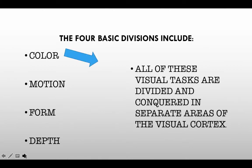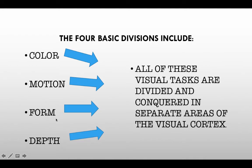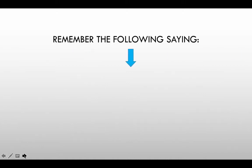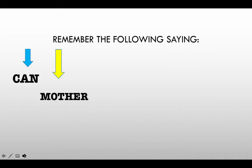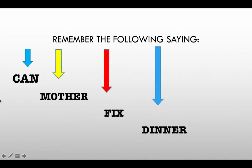Four of these processes are processing color, motion, form, and depth in different areas of the visual cortex simultaneously. Of those, form is probably the most important one — the basic outline of an object. Without form, it would be difficult for the other aspects to create a recognizable perception. So remember the following saying: "Can mother fix dinner?" — each first letter represents one of the aspects of parallel processing: color, motion, form, and depth.